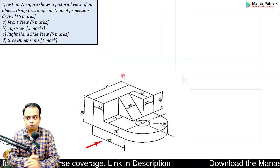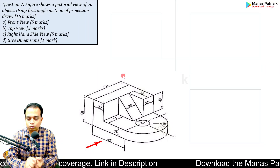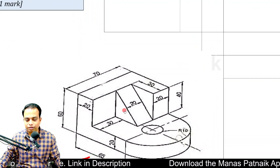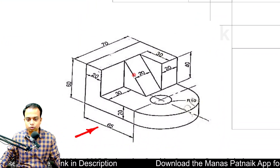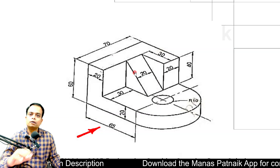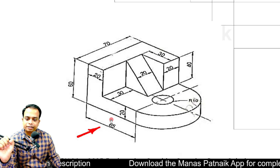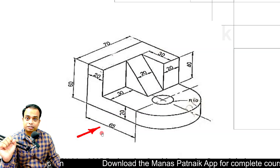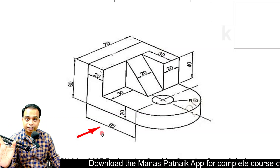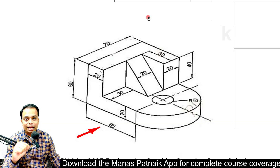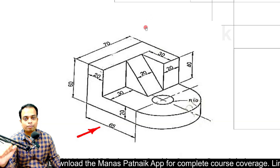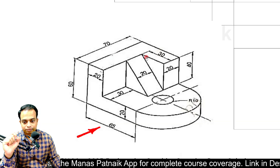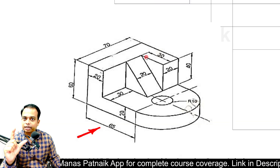Another problem on orthographic projection. We are supposed to create the front view — this arrow represents the front direction — the right-hand side view, and the top view for this object.